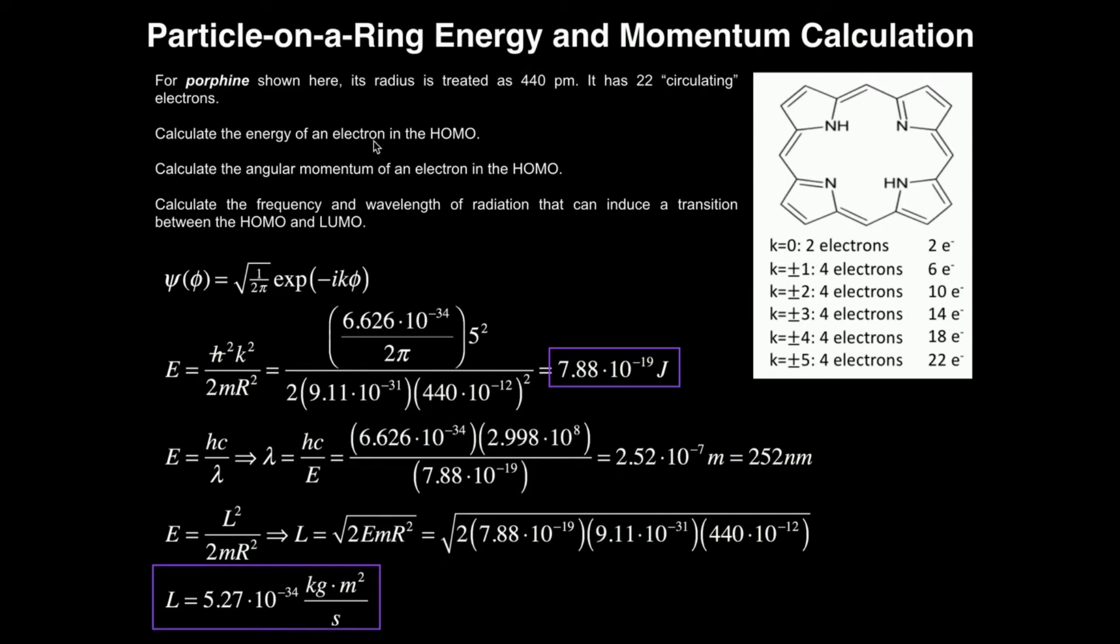We want to calculate the energy of an electron in the highest occupied molecular orbital, or the HOMO, and then calculate its angular momentum. So how do we do this? We have to know the energy level of the HOMO, and to do that we have to know the magnetic quantum number, the K, but it's not given. So how do we determine that?